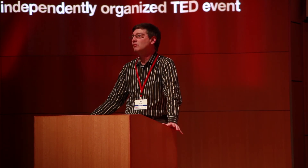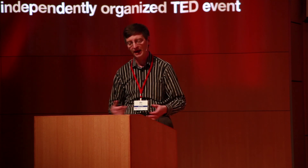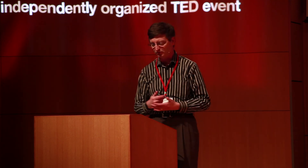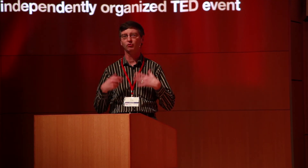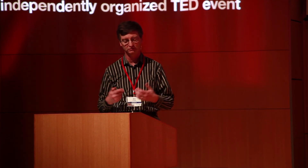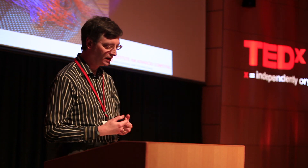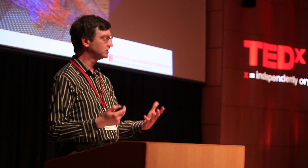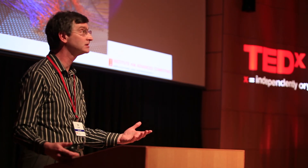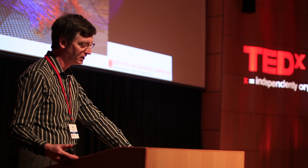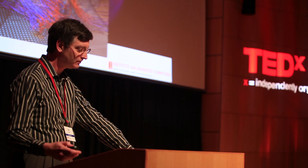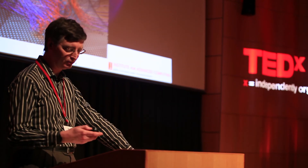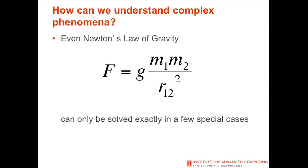First we have to have a mathematical model of the basic processes — some way to talk about how things happen. Then we have to find solutions, or at least approximate solutions, for those mathematical models. But even simple mathematical systems can lead to complex behavior. There is only going to be one equation, so don't get too scared yet.